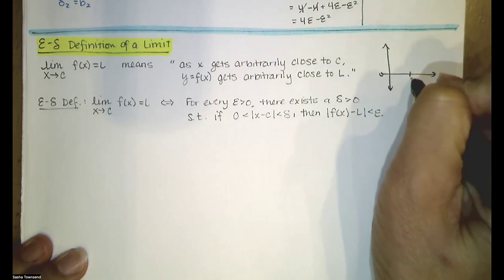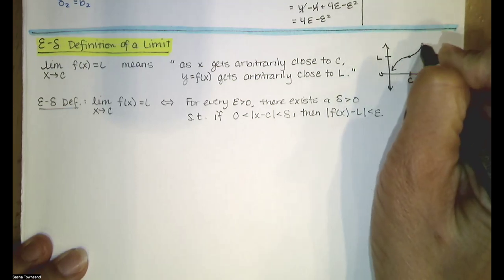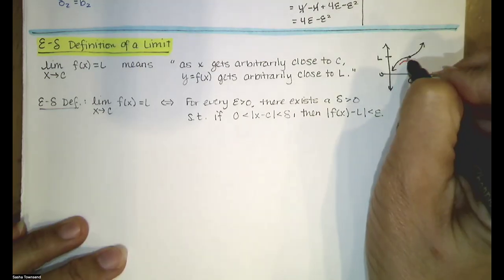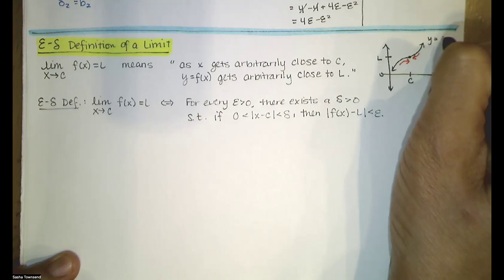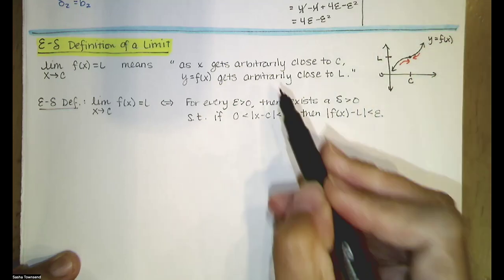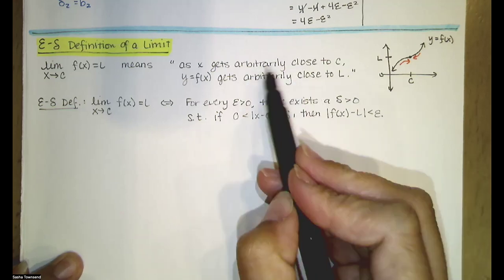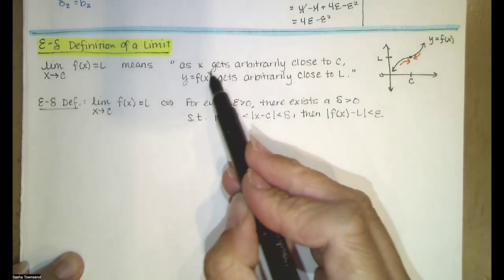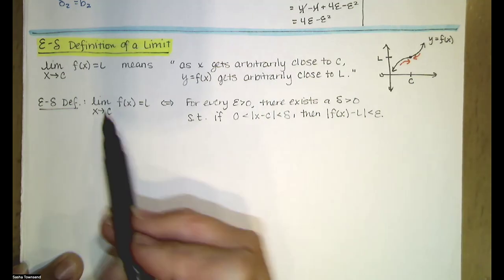So if the function is continuous at x equals c and y equals L, the graph might look like this. We're saying as we approach c from the left and the right, the y values get arbitrarily close to L. Now you might ask yourself, how do we make this idea rigorous — this idea of being arbitrarily close to y equals L and arbitrarily close to x equals c?